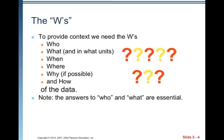The W's and really 1H. They are going to be what provide us context. To provide context, we need the W's. The first one is who. The next one is what and in what units. The third one is when. The fourth one is where. The fifth one is why, if possible. Sometimes you don't have that information. And finally, the how of the data. Note, the answers to the who and the what are essential. The rest are nice to know, but sometimes we have incomplete information.